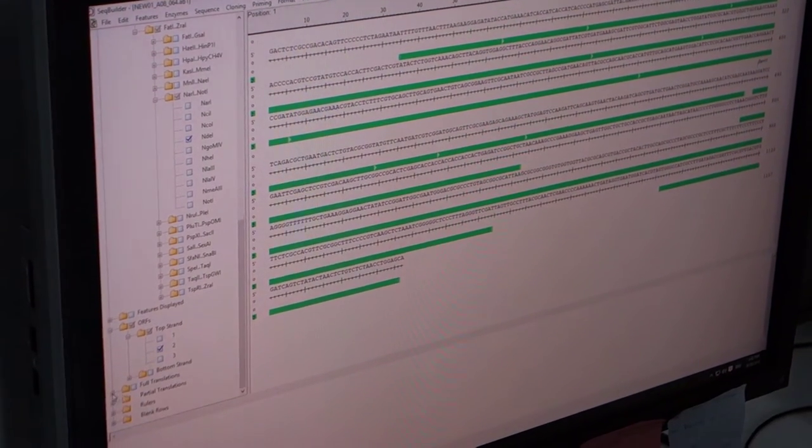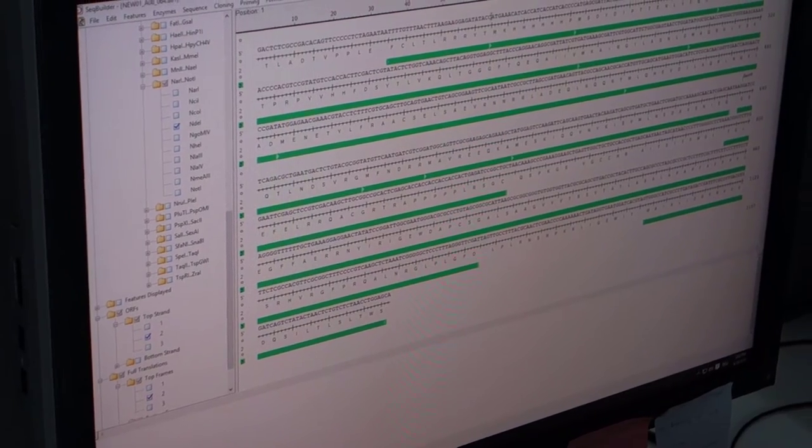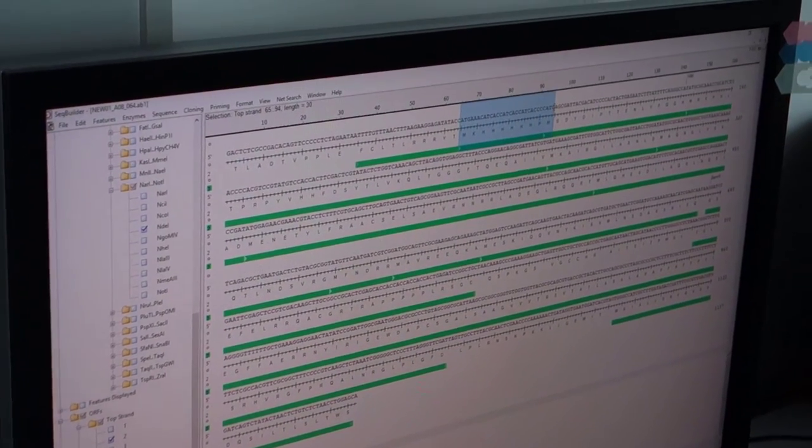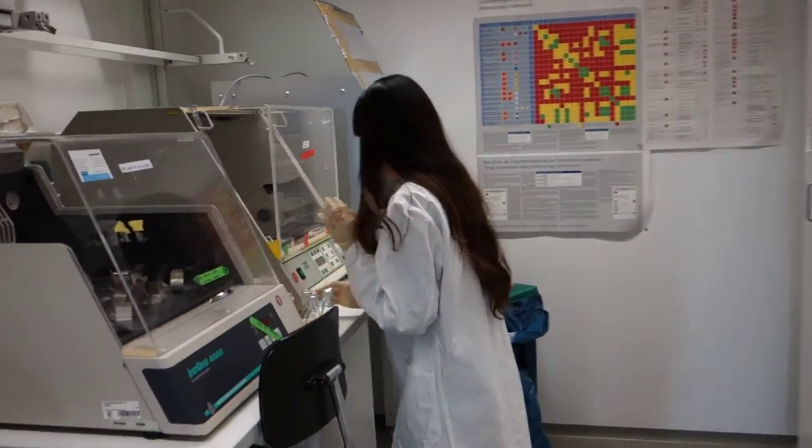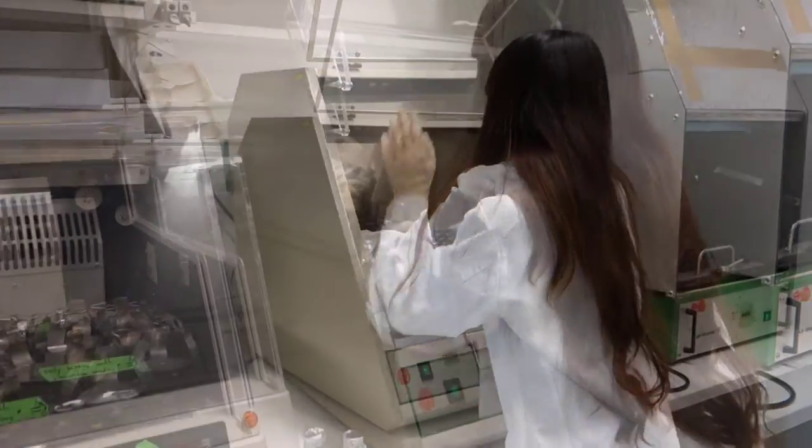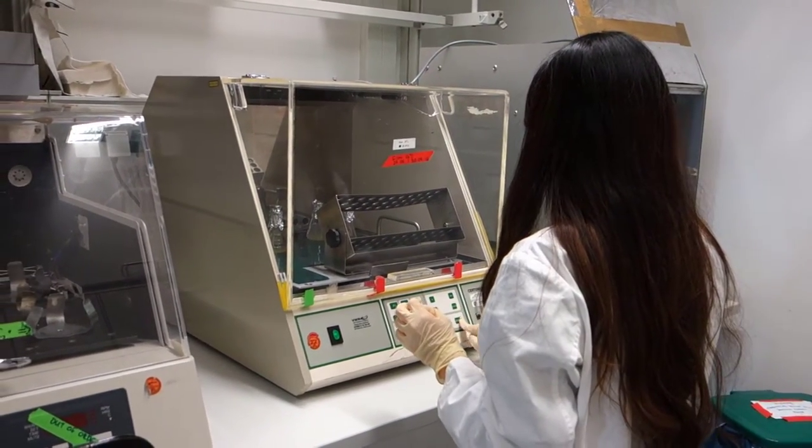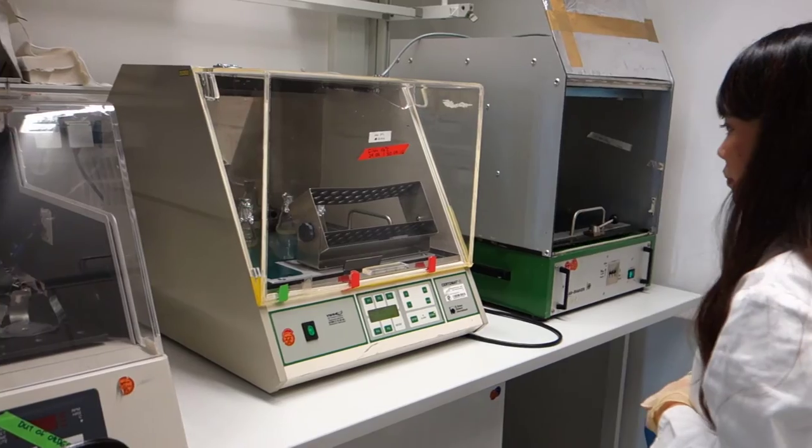First, we begin with creating a new construct. For this, we usually order synthetic genes and then we decide which tag should be used. Fusion tags are useful because they improve the protein stability and can be used as aid in the purification process.